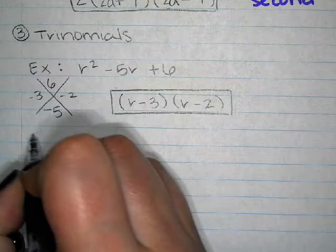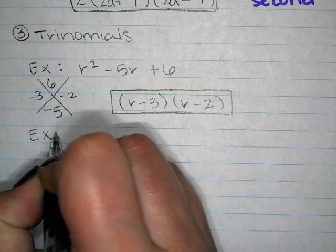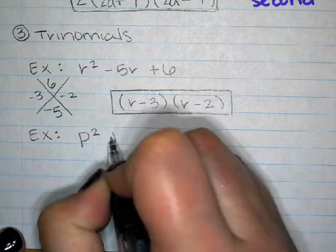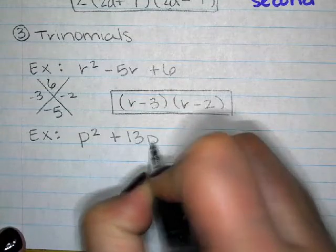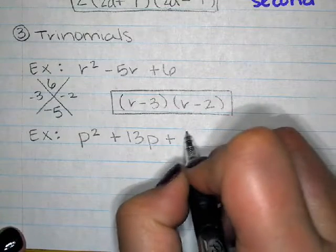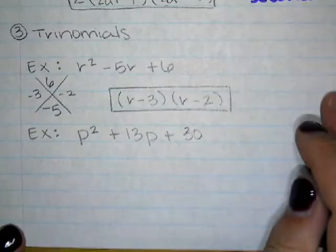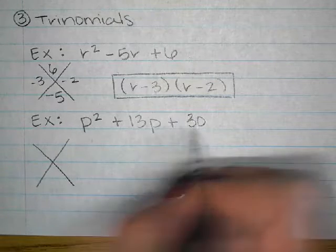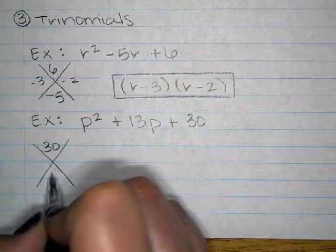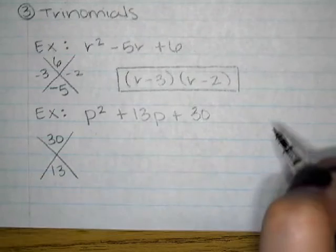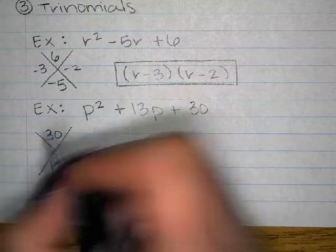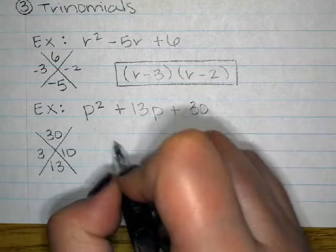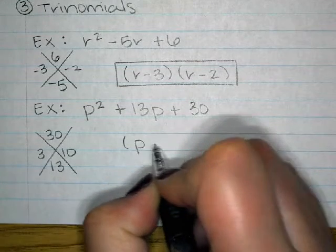What about p-squared plus 13p plus 30? Multiply to 30, add to 13 — that's 3 and 10. So our factors are (p plus 3)(p plus 10).